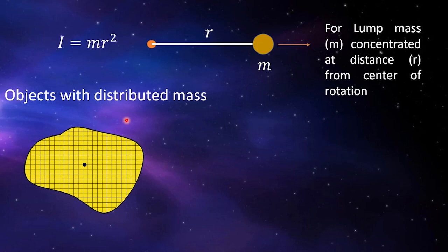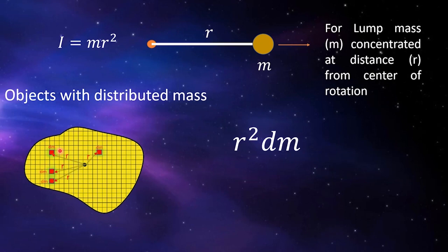Let's say we have an object with distributed mass, and the blue dot represents the center of rotation. We divide it into infinitesimal masses, represented by small squares. We consider a very small mass dm — since dm is very small, we can consider it as a concentrated lump of mass located at distance r from the center of rotation. This lump follows the formula r² dm. To find the total moment of inertia, we sum all r² dm values for every infinitesimal mass. If you're familiar with calculus, summing infinitesimal terms is the same as integrating: I = ∫r² dm.